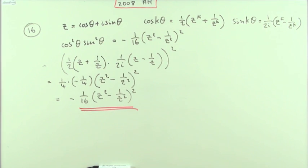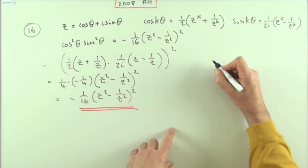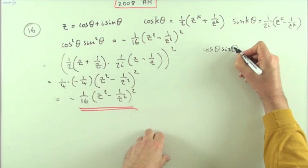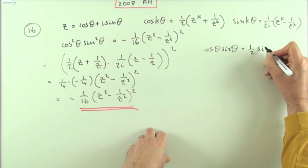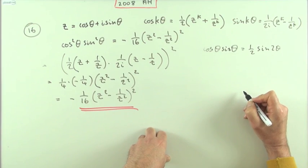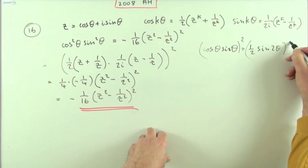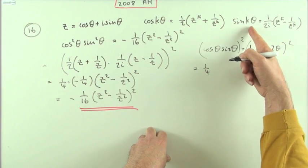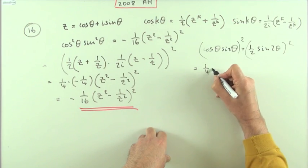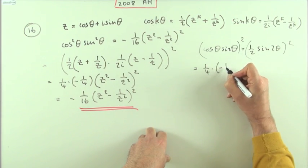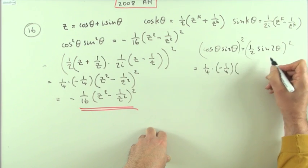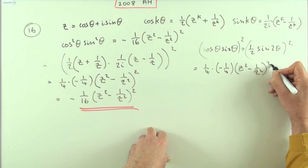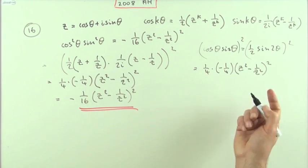Alternatively, cos(θ)·sin(θ) is the same as one half of sin(2θ), so squaring gives one quarter of sin²(2θ). The constant part squares to -1/4, and with k equal to 2, z² - 1/z² squared gives the same result: negative one sixteenth of (z² - 1/z²)².